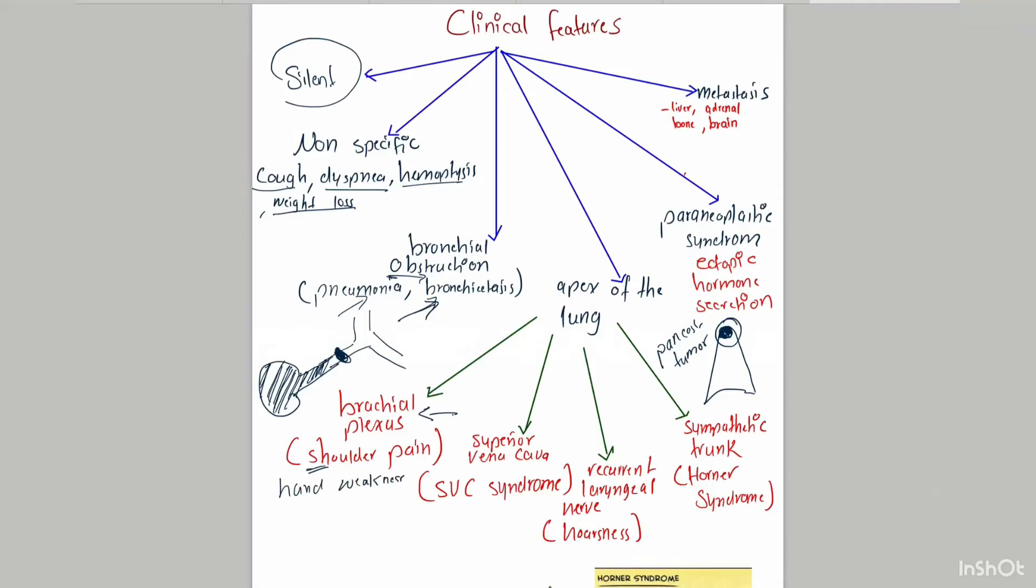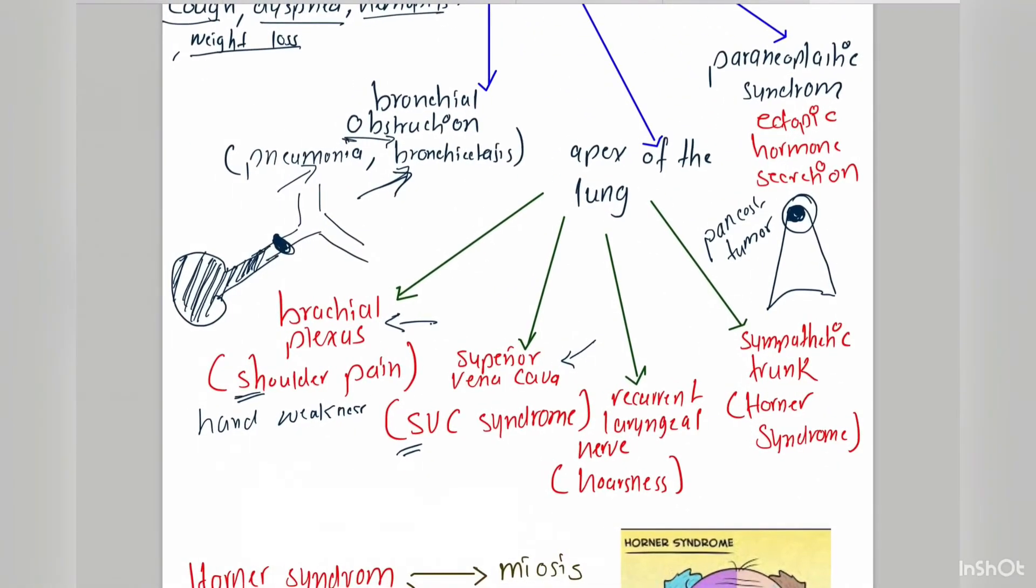Or it may cause compression on the superior vena cava and present as superior vena cava syndrome. Superior vena cava syndrome is characterized by edema of the face, neck, and both upper extremities because of obstruction to the superior vena cava. This lesion may cause compression on the recurrent laryngeal nerve and cause hoarseness, or the Pancoast tumor may cause compression on the cervical sympathetic trunk and cause Horner syndrome.